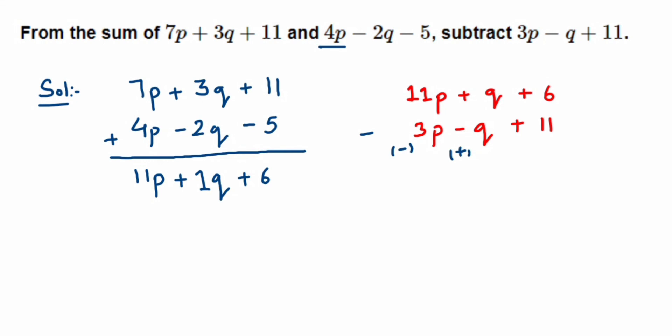So these new signs we have to consider when solving or when you're subtracting it. Now 11p - 3p will be 8p, so we'll get 8p with a positive sign. And then here, q + q - I will take this plus sign, not the minus - so q + q is 2q, so +2q.